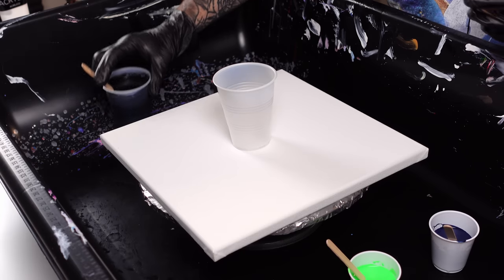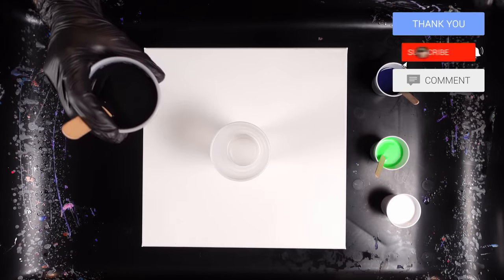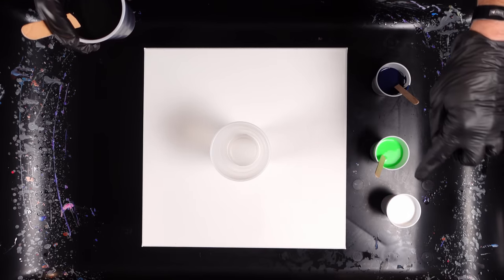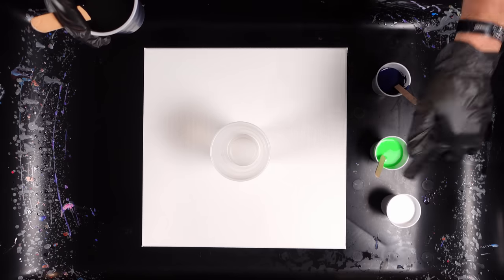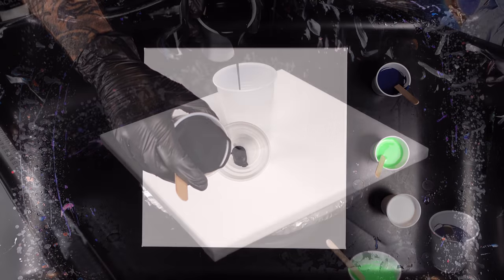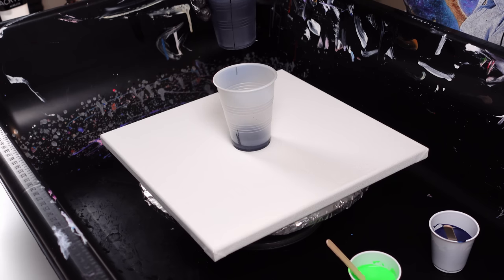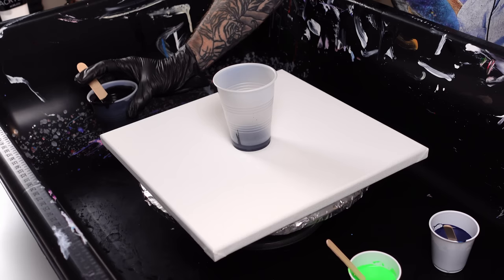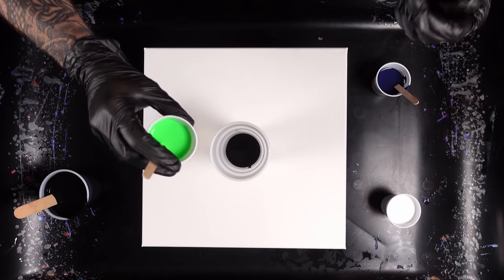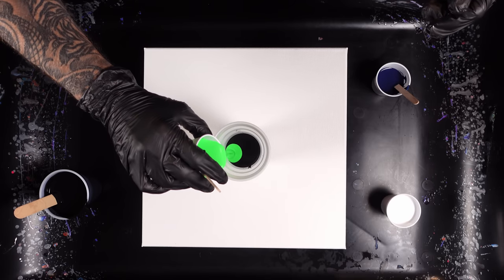We're going to start just by layering the cup. There is silicone in these colors now, so that was the addition to this. Prussian blue has silicone, two drops, and the fluorescent green has silicone. Trying to possibly incorporate some cells into this as well. The Prussian blue, I'm hoping that it blends really well with this white so we can create some really cool color combinations.